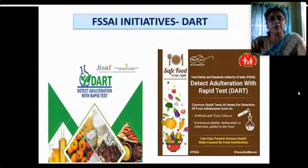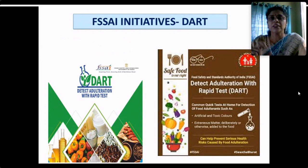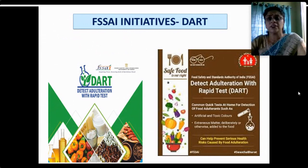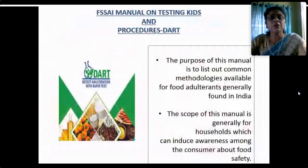One important initiative consumers need to be aware of is FSSAI's DART resource material — DART stands for Detect Adulteration with Rapid Test. It is a PDF booklet released by FSSAI available on their website. It provides very common, quick and simple tests for detection of food adulterants such as artificial colors, toxic colors and extraneous matter — tests that can be done by housewives, children and all common people at the household level, at restaurants, at industries — everywhere.